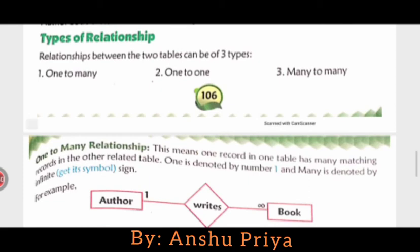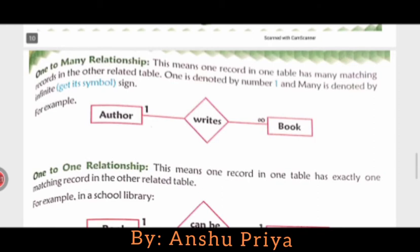Now let's move to the next topic: Types of Relationships. The relationships between two tables can be of three types: one-to-many, one-to-one, and many-to-many. Let's discuss them one by one. One-to-many means one record in one table has many matching records in the other related table. One is denoted by the number 1 and many is denoted by the infinity sign.